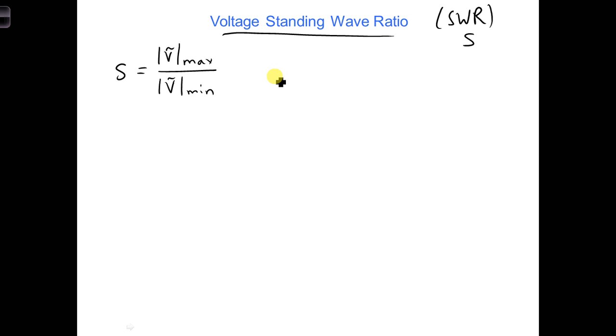If we know V0 plus and we know the reflection coefficient, we can write out the expression for S with respect to V0 plus and the reflection coefficient. For example, since Vmax occurs when the positive and negative voltage phasors are parallel, we can write Vmax amplitude is V0 plus times 1 plus the reflection coefficient voltage at the load.